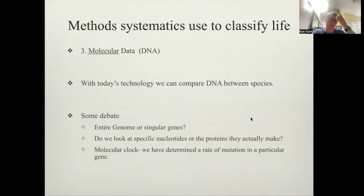And so methods that systematics use to classify, they're going to use again, we talk about anatomy, fossils, anatomy, and now number three, molecular. And again, this should all be reviewed. So with today's technology, we can just look at the DNA, we can look at the amino acids, the proteins. But there's some debate on how to use this tool. Do we look at just one, a couple genes, one gene, the whole genome, like all the genes of an organism? Do we look at the nucleotides, like the GATC, the DNA? Or do we look at the proteins and the amino acids?